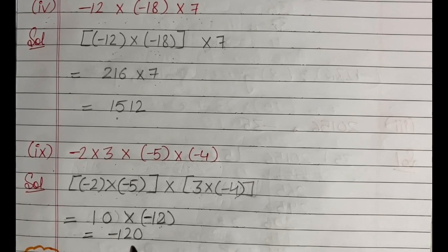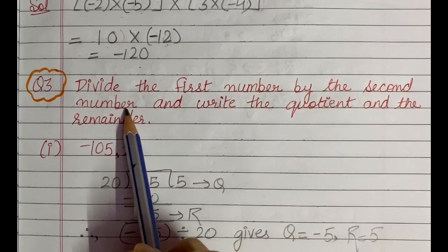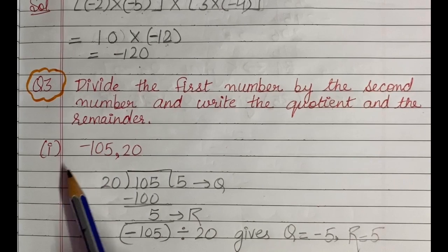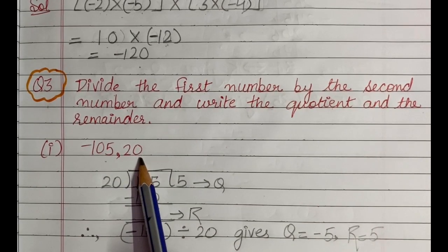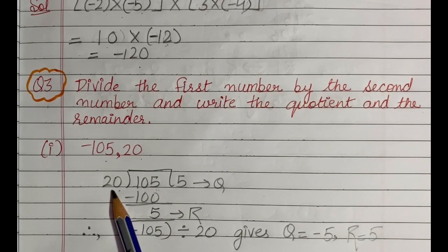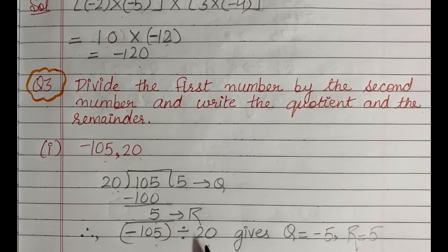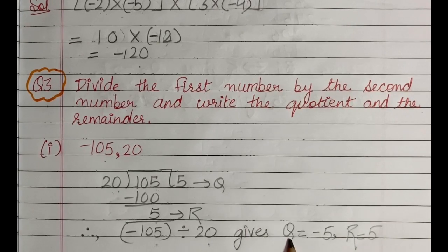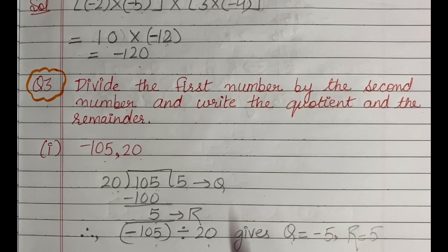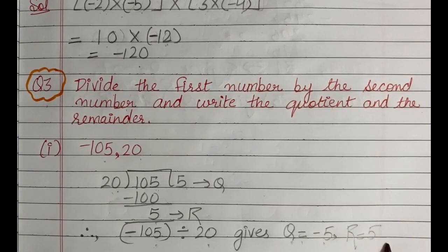Next, I have taken question number 3, which says: divide the first number by the second number and write the quotient and remainder. The first part is (-105, 20). We divide 105 by 20, getting quotient 5 and remainder 5. Since we are dividing -105 by 20, one integer is negative and the other positive, so the answer will be negative. We give that negative sign to the quotient, not the remainder. So quotient is -5 and remainder is 5.